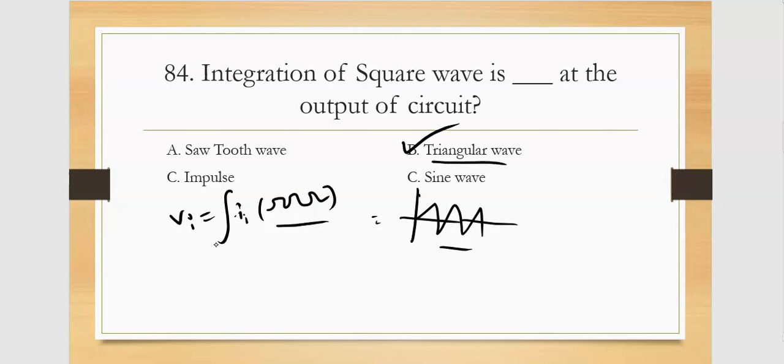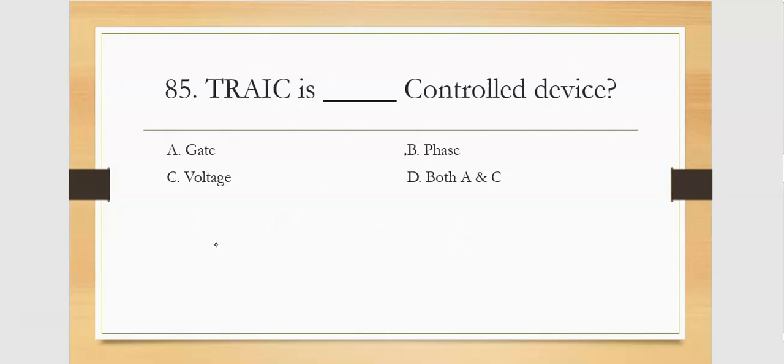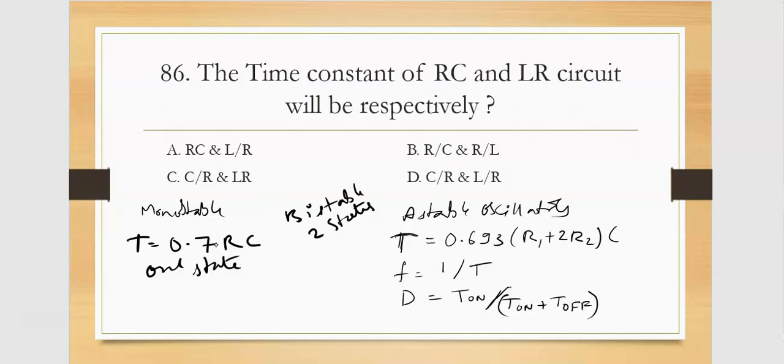Name a three terminal device, two junction device, three layer device. It's used for AC phase control - the answer is thyristor or SCR. Triac is also AC device, but the question asks for three terminal, so the answer is thyristor.